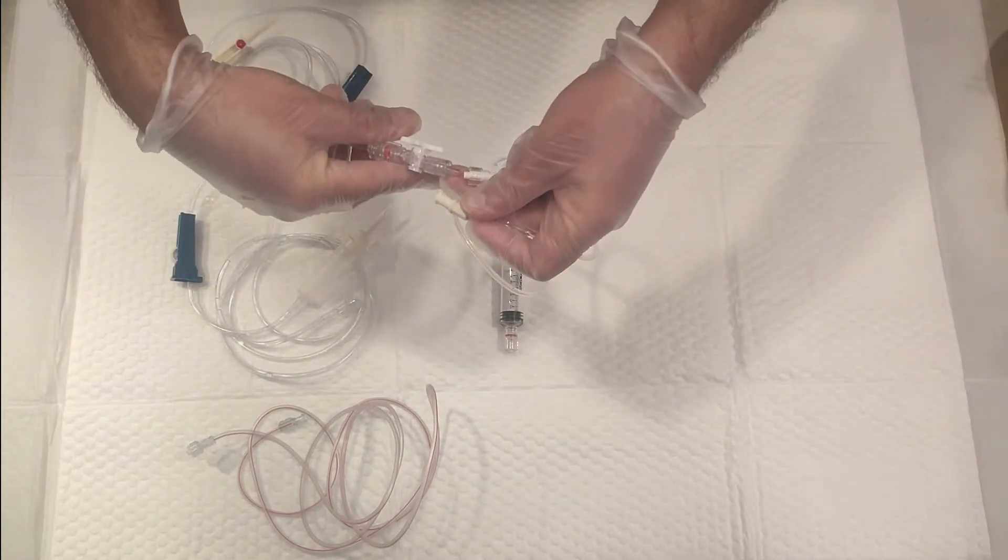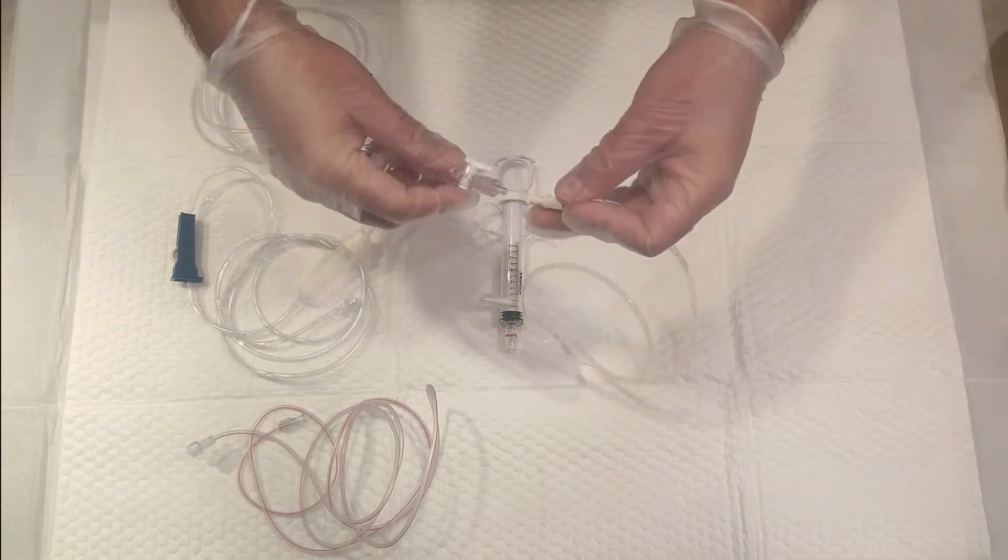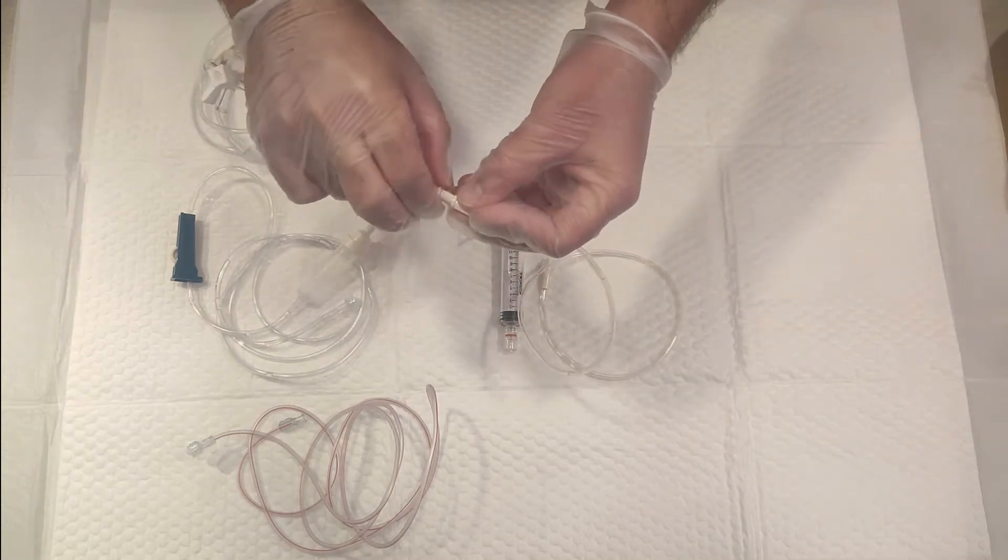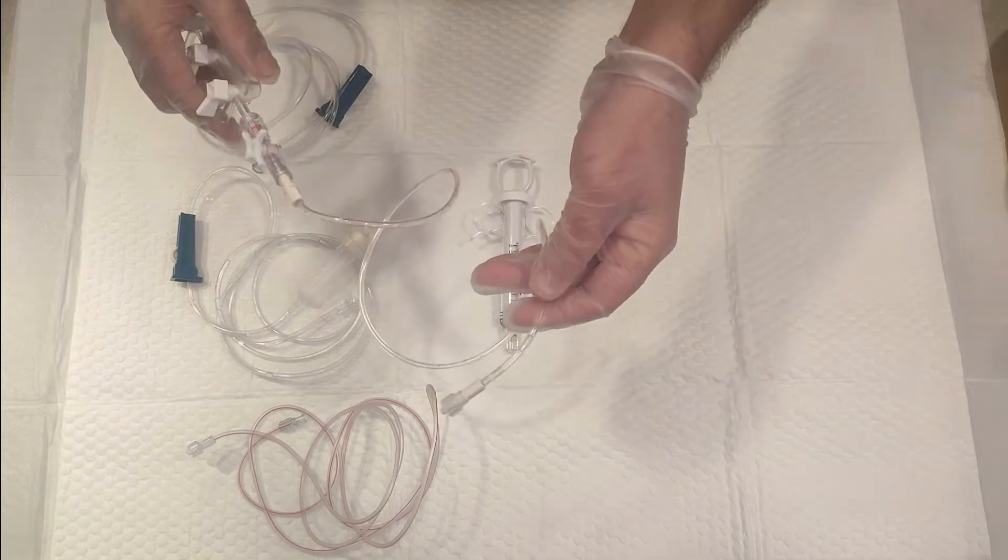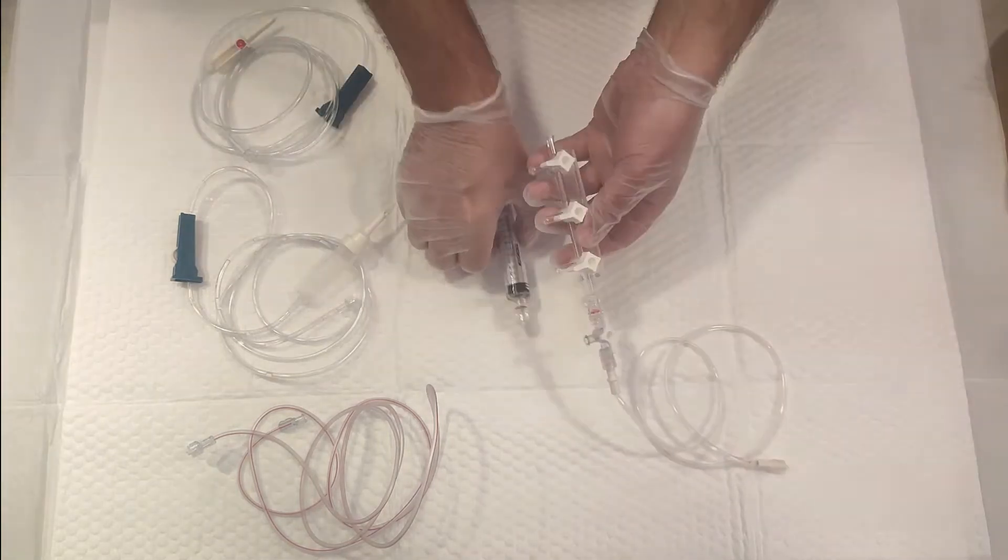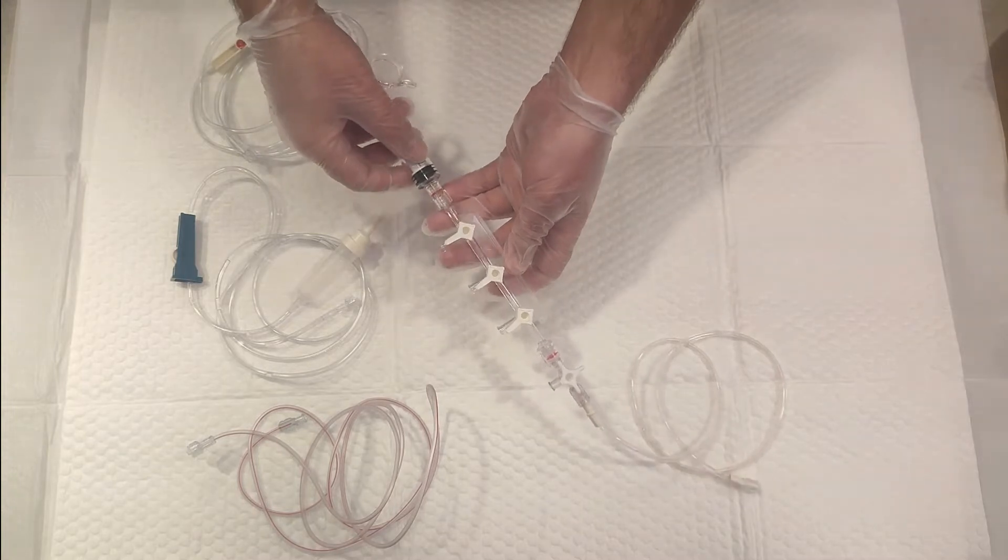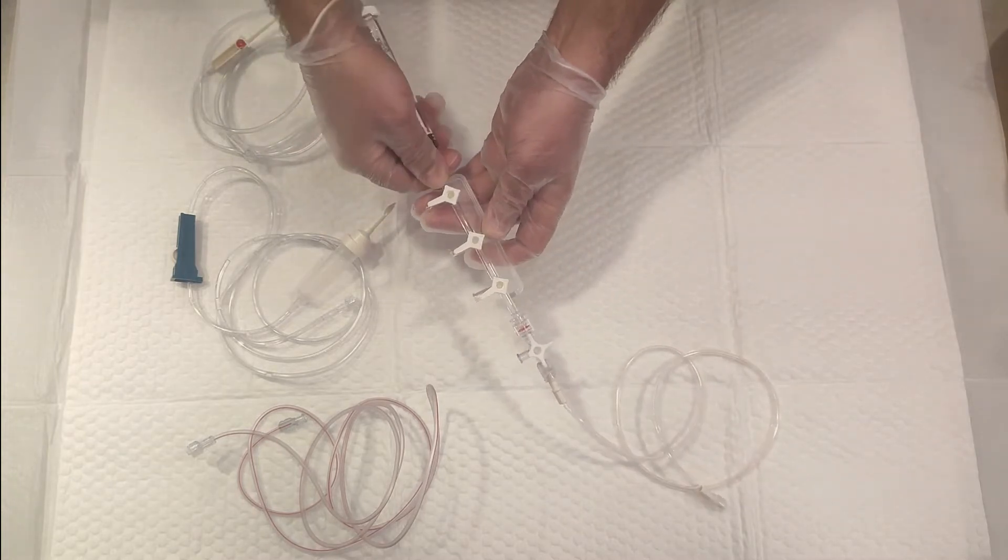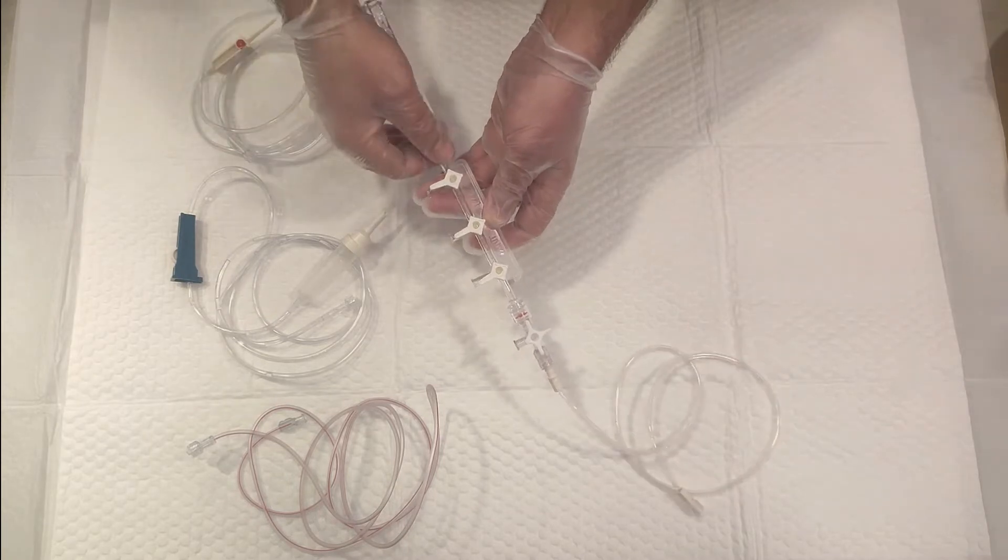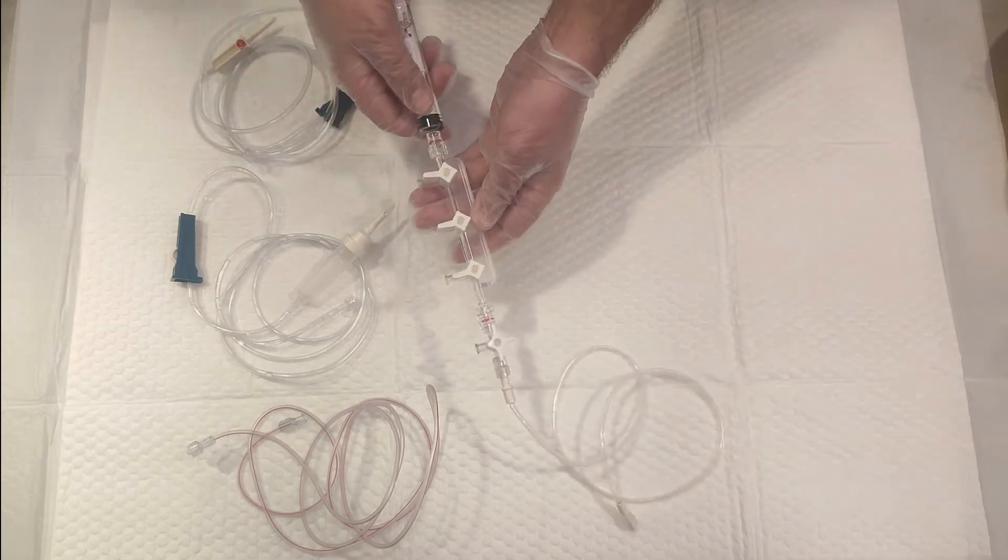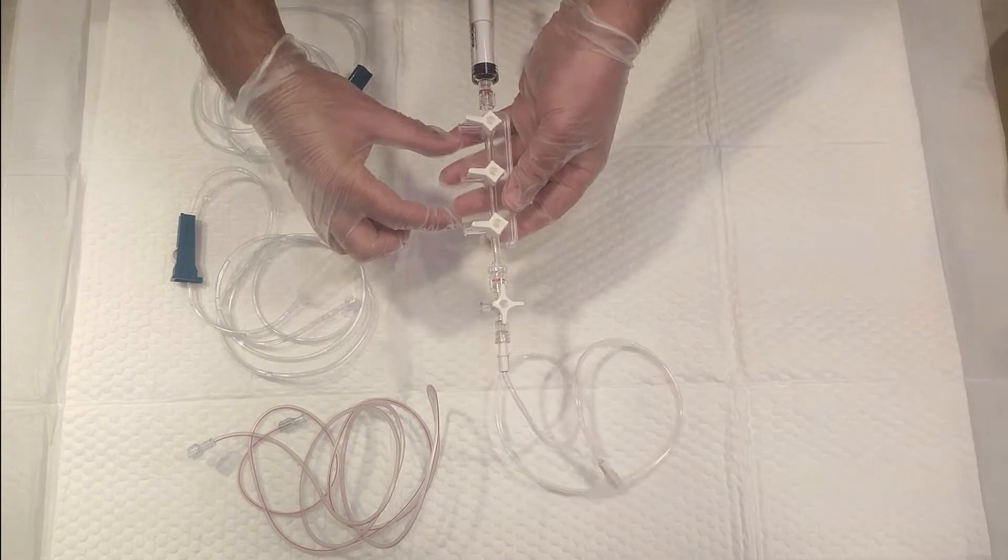It should be male to female. As you can see, if I try it this way, it won't connect. So male should go to the female side. Now it's extended. You can attach it to a high-pressure syringe at the other end. Just tighten it to avoid any potential error.